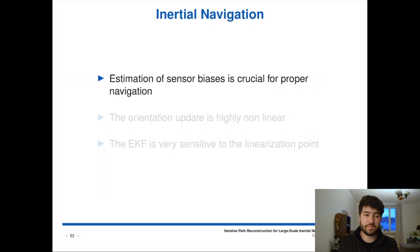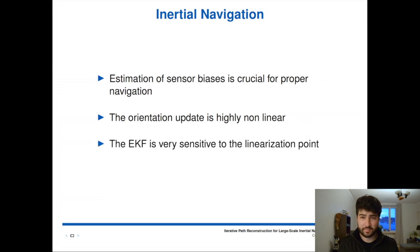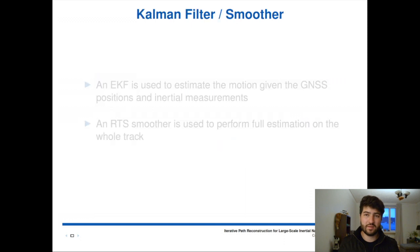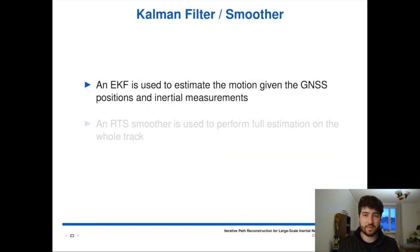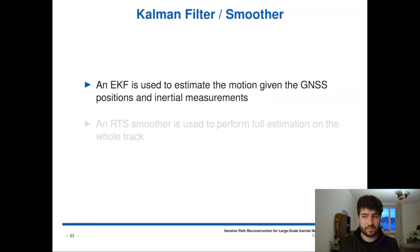Sensor biases are one of the big problems with the system, and estimating them properly is very, very important. The orientation is highly nonlinear, and unit quaternions do not lend themselves to linearization easily. So the EKF becomes very sensitive to the linearization point. Our system has an EKF used to estimate the motion based on the GNSS and IMU data. It provides a good estimation of the track as it moves forward, so your current position is roughly correct. Once the gap starts, the drift increases very, very fast, and when the gap ends, it usually returns to almost the correct place.